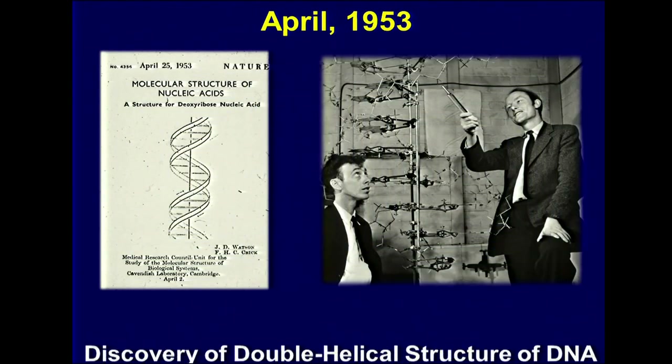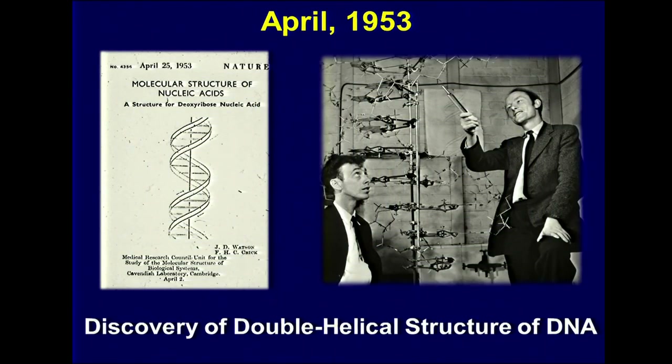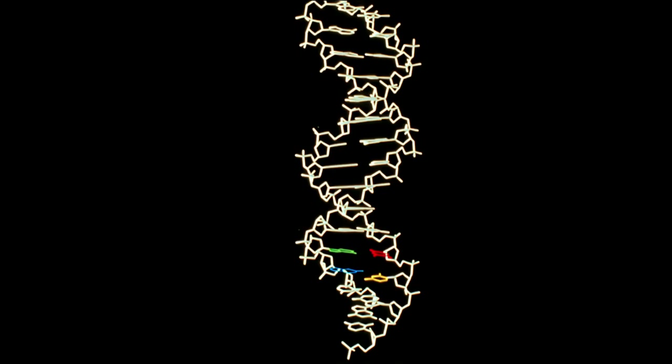That set the stage for what took place in the 1950s with Watson and Crick's discovery of the double helical structure of DNA. Shown here is that Nature publication — arguably the most significant publication of the last century in the biomedical research arena. The double helical structure of DNA really provided the last piece of the puzzle to understand how DNA could be the information molecule carrying information from one cell to the next and one generation to the next.